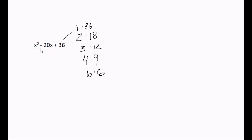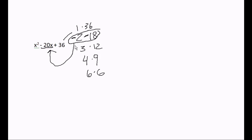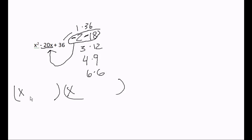Step two: find one of the pairs by putting plus or minuses in front of them to try to equal negative twenty. If I put a minus in front of the two and a minus in front of the eighteen, a negative two and a negative eighteen equals negative twenty. So this is our pair. Step three: two big parentheses, x in each first spot since there's an x², then use the pair — a minus two and a minus eighteen.